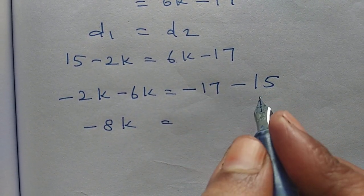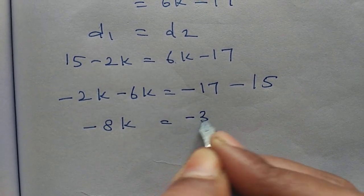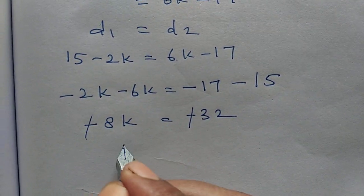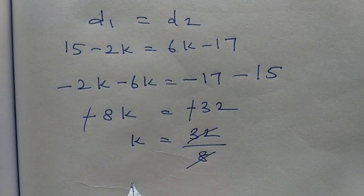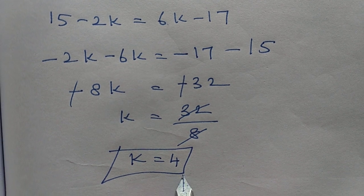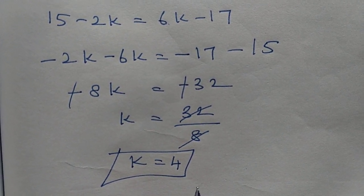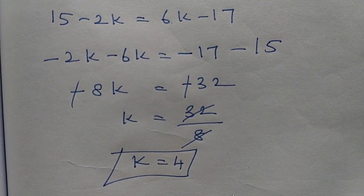Minus 8k equals minus 32. Minus cancel. k equals 32 by 8. k equals 4. Now you got the k value, this is the answer for the 8th sum. Next sum, subscribe, thank you.